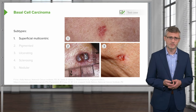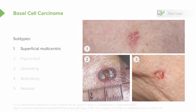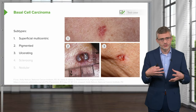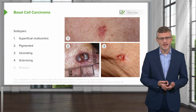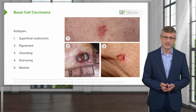There are multiple different subtypes, and you have to be familiar with the names for the board exam. The subtypes are: superficial multicentric, shown in the top picture; pigmented — these can be very black, brown, or dark reddish lesions; ulcerating lesion, which can have rolled borders and a central hollowed-out ulcerated area; the sclerosing subtype, not shown here; and the nodular subtype, which we'll see on the next slide.